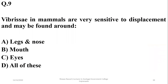Question 9: Vibrissae in mammals are very sensitive to displacement and may be found around which part of the body? They are found around the nose, mouth, and eyes in different animals at different sites. The right option is D.